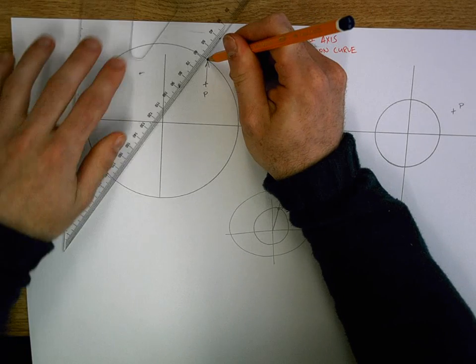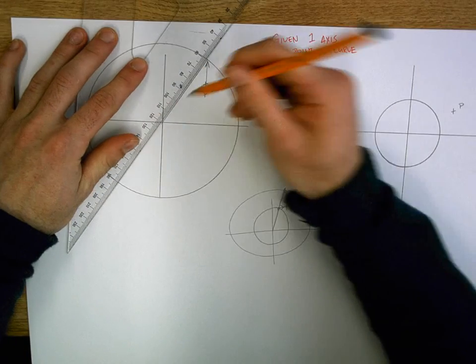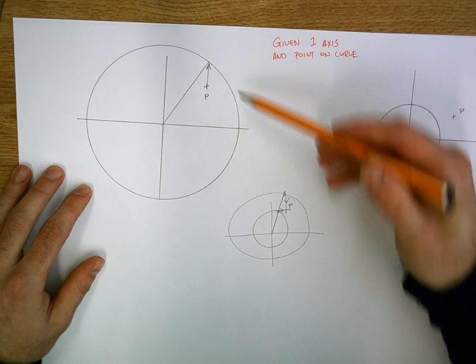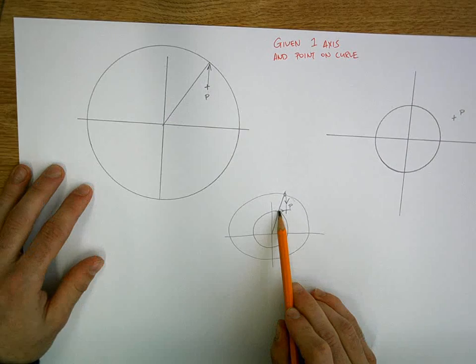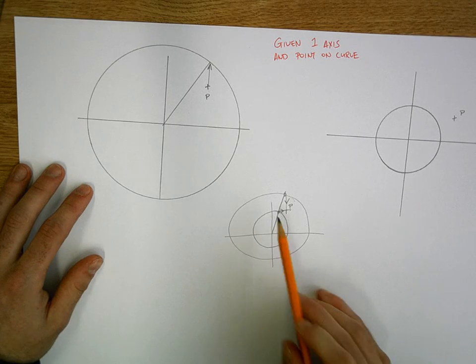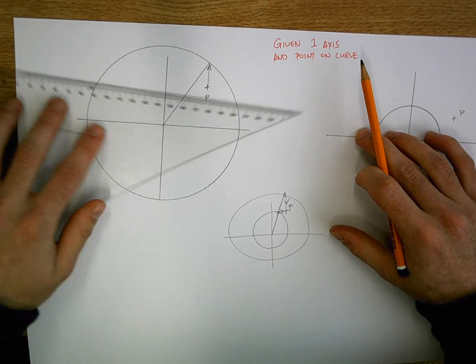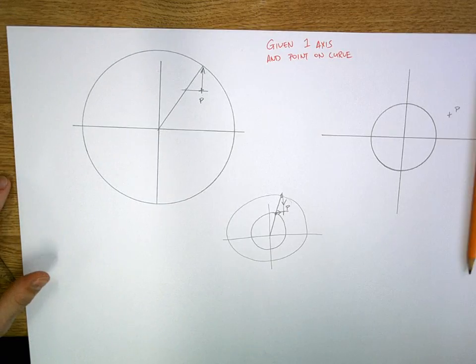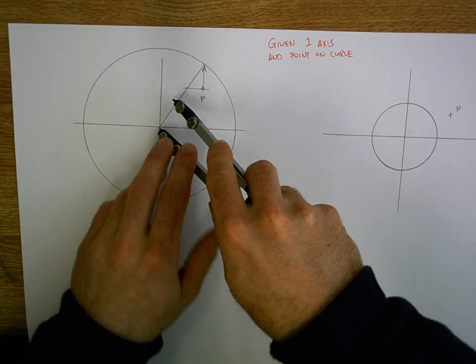And then what we see is that where that hits the major circle is joined back to my center point. So we'll do that as well. Now the relationship between that line and point P is a horizontal line. And where they cut is the minor circle. So we bring a horizontal line straight across. And that's going to give us the radius of our minor circle.